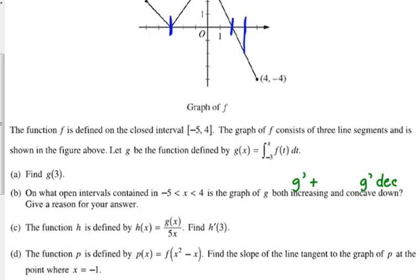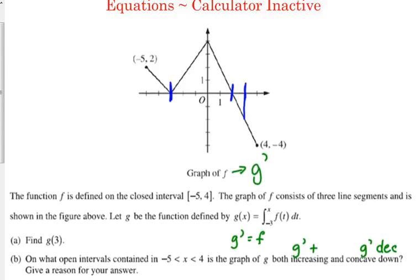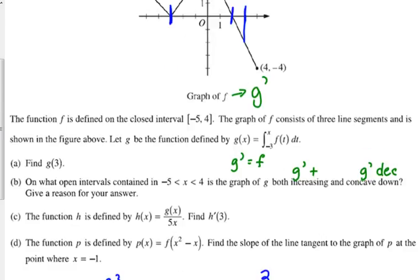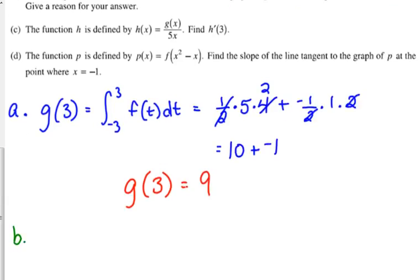Well, let's think about what g prime is. If g is an integral, then g prime, when you take the derivative of the integral, it's just going to cancel. g prime is f. The graph of f is the derivative of g. So, we want to determine where this graph that we're looking at, where is it positive and decreasing. So, 0 to 2, anywhere else? Negative 5 to negative 3. Okay, so negative 5 to negative 3, and from 0 to 2.